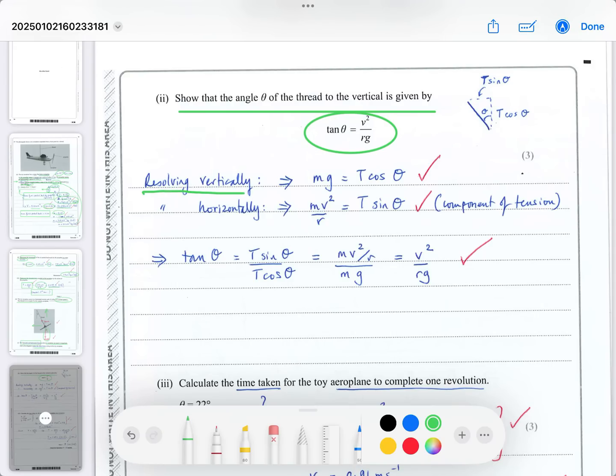To prove this equation, resolve vertically: the weight mg equals T cos θ. Resolve horizontally: the centripetal force mv²/r equals T sin θ. Check the diagram - these are components of the tension we discussed before.